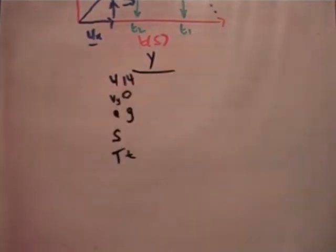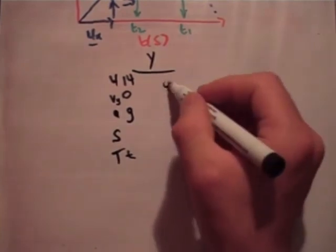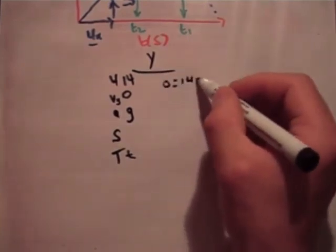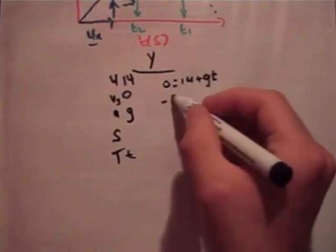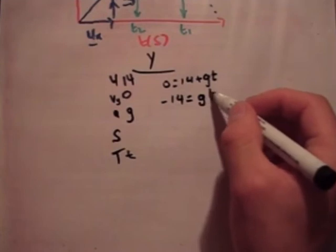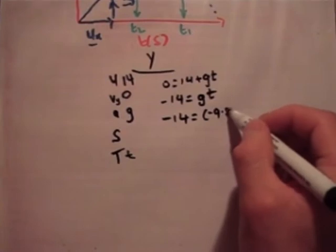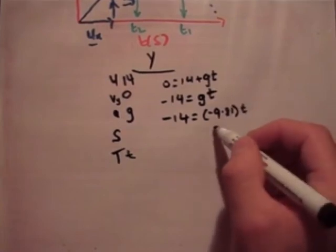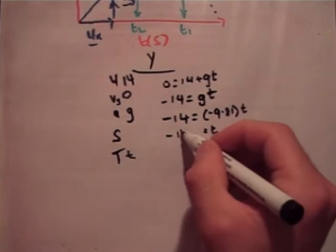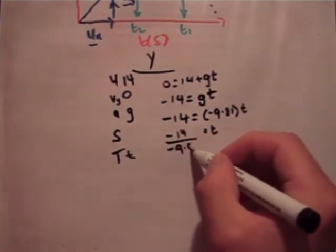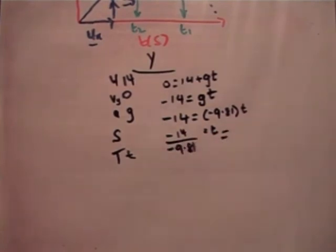So the first thing we need to do is find the time at which v sub y is equal to zero. Let's say v equals u plus at. So 0 equals 14 plus gt. Minus 14 equals gt. Minus 14 equals minus 9.81t. t equals minus 14 over minus 9.81. Let's pull out my calculator. So 14 divided by 9.81. The negative signs cancel and you get a time of 1.42 seconds.